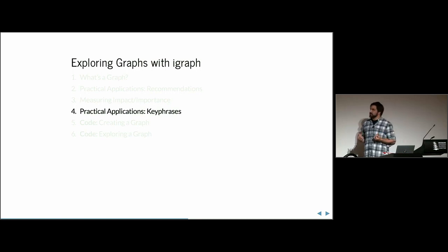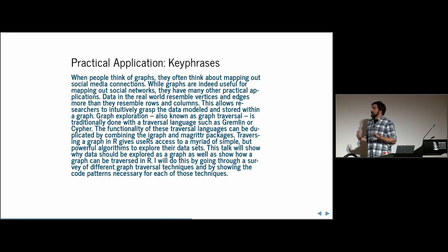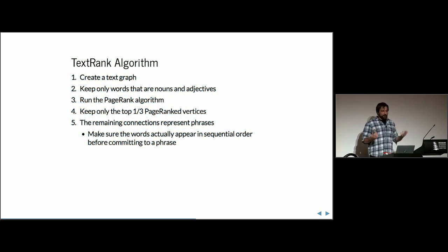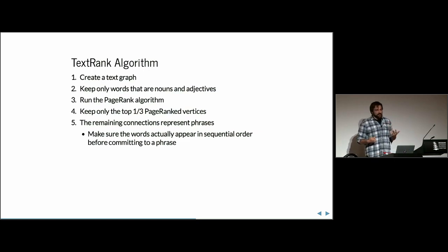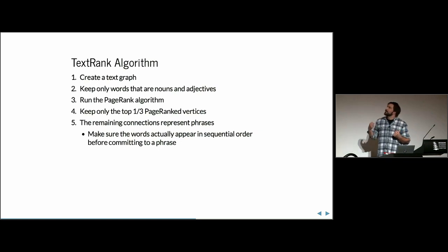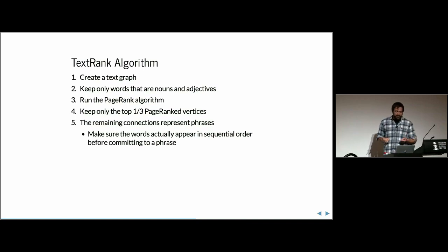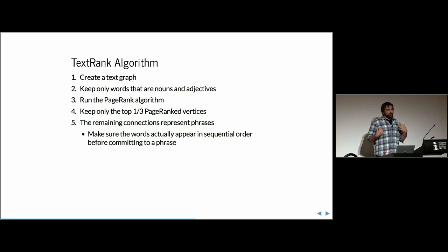PageRank is the basis of a lot of other algorithms, and many people adapt it for their own use cases. We're going to use PageRank to extract key phrases from my own abstract for this talk. The algorithm is called TextRank, and it basically uses PageRank on a graph built from text. We create a text graph, remove everything that's not a noun or adjective, run the PageRank algorithm, and keep only the top third of PageRank-ranked vertices.